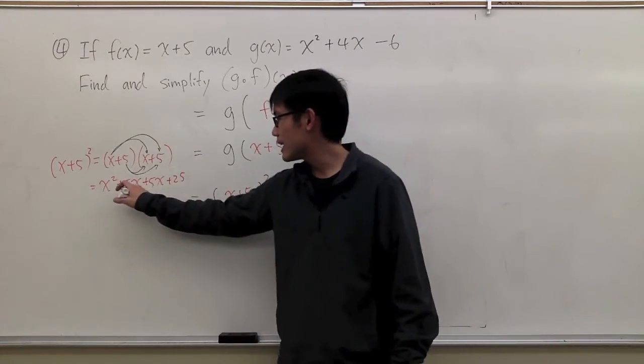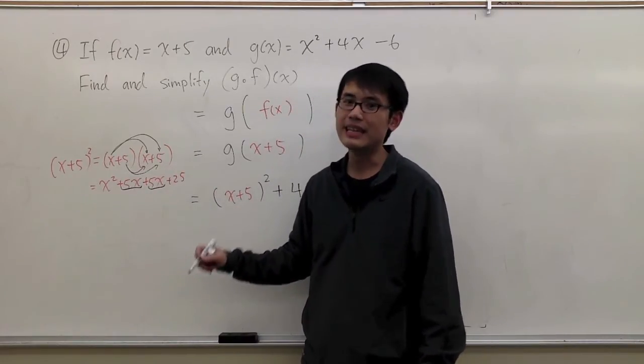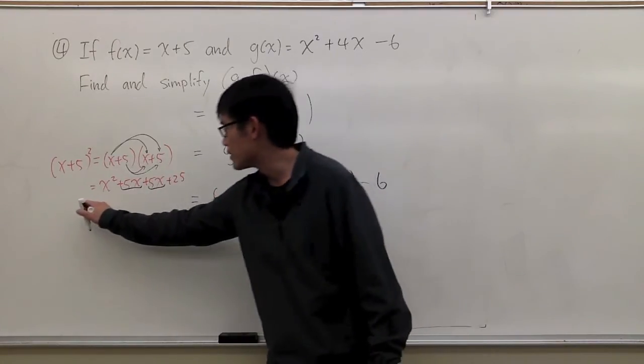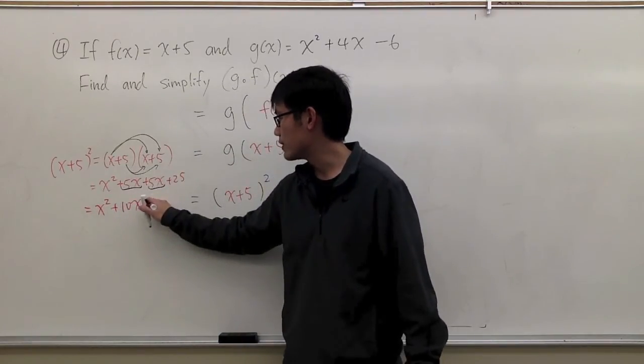And notice that we have the 5x here and the 5x there. We can combine terms and get 10x. So this will be x squared plus 10x plus 25.